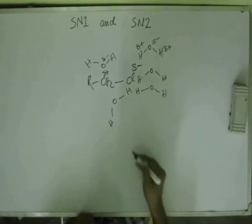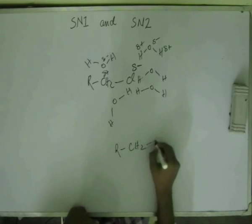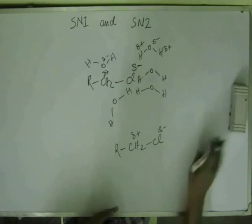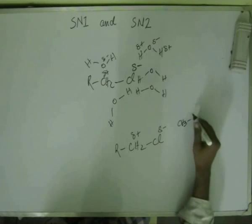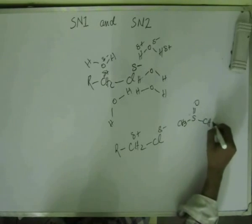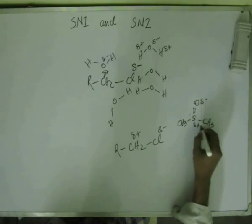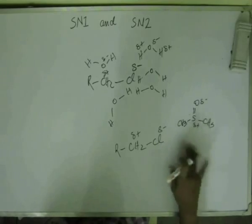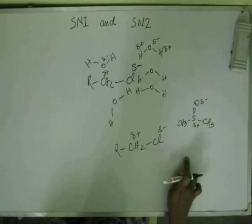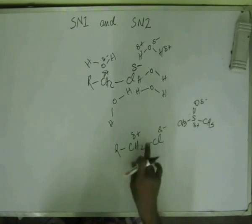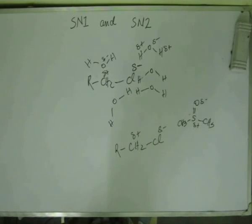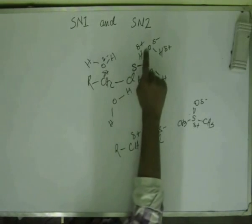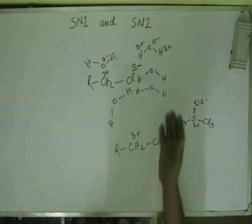Suppose we don't have a polar protic solvent. Instead, we have a polar aprotic solvent like DMSO — dimethyl sulfoxide. The key difference between dimethyl sulfoxide and water is that in water there is a plus charge on hydrogen, but in DMSO there is a plus charge on a bigger atom — sulfur. Another important difference is that in polar protic solvents, the plus charge is at the terminal end of the solvent.